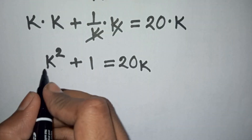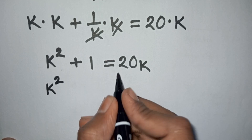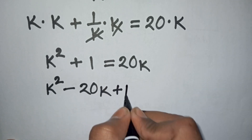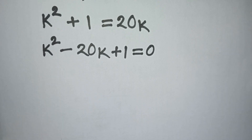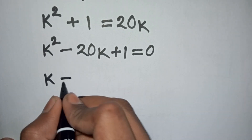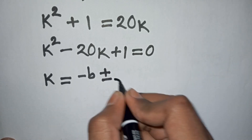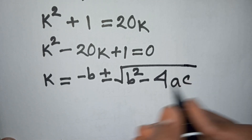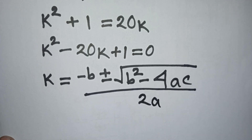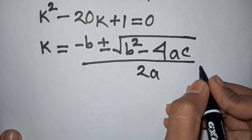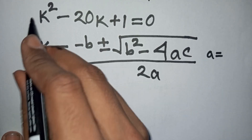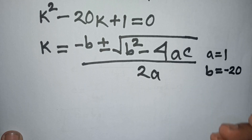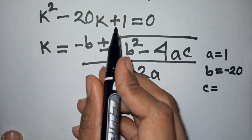Now we have k squared. Taking 20k to the left side gives minus 20k, so the equation becomes k squared minus 20k plus 1 equals 0. In the next step, we apply the quadratic formula: k equals negative b plus or minus square root of b squared minus 4AC, divided by 2A. Here A is 1, b is negative 20, and c is 1.